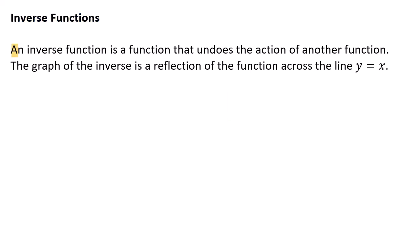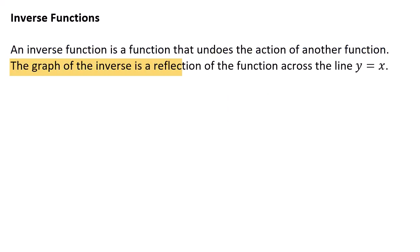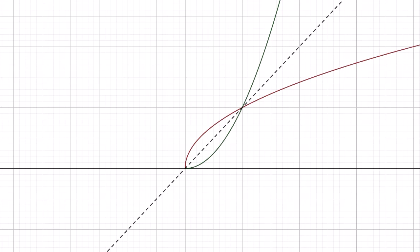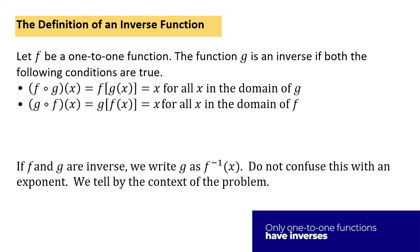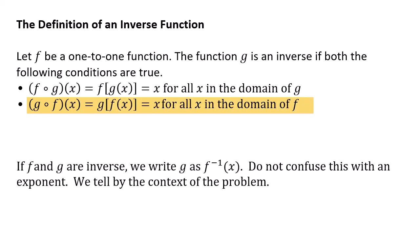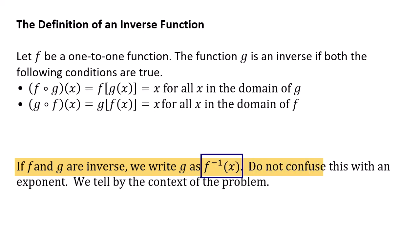Next I'll talk about inverse functions. An inverse function is a function that undoes the action of another function. The graph of an inverse is a reflection of the function across the line y = x. The function g is an inverse of f if both of the following conditions are true: f∘g(x) = x for all x in the domain of g, and g∘f(x) = x for all x in the domain of f. If f and g are inverses, we write g as f⁻¹, which looks like an exponent of negative one — but it isn't. It means the inverse of f, not a reciprocal. We can tell the difference by context.